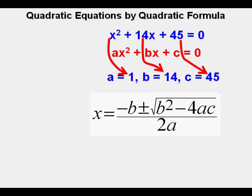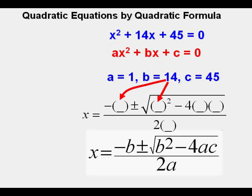Wherever there's a letter in the formula, he places a parentheses for a number to be inserted. The b is 14 and is inserted here and here where the arrows are pointing. The a is 1 and goes here and here where these arrows point. The c is 45 and goes here.